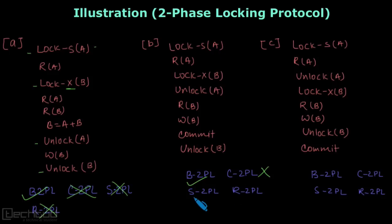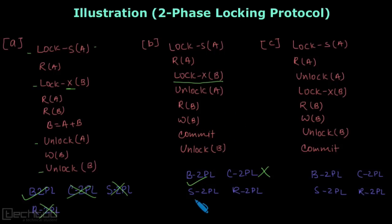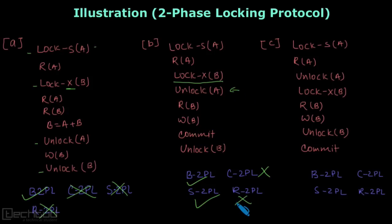Now let's check strict 2PL for transaction B. We look for exclusive locks — there is an exclusive lock on B, and this exclusive lock is only released after commit. So yes, it is strict 2PL. For rigorous 2PL, the additional rule is that all locks must be unlocked after commit. That is not true here because the lock on A was unlocked before commit, so it is not rigorous 2PL.